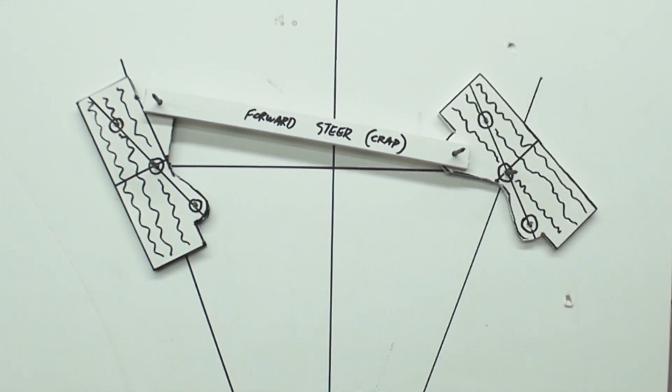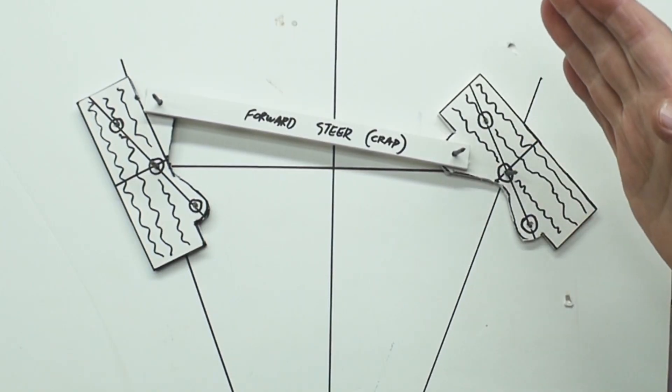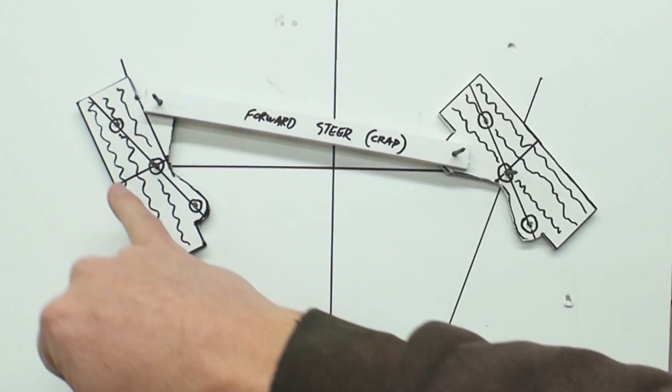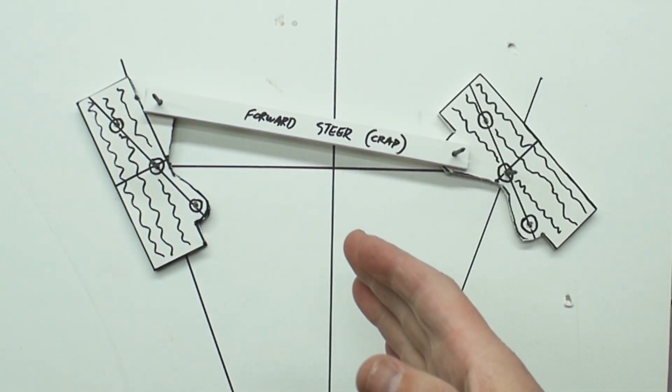So now if you notice, we're getting the complete opposite effect of what we want. I'm turning to the left yet my outboard wheel is making a tighter turn than the inside wheel. Now, you know, this is going to work. It's going to work. It's going to make the turn. However, there's going to be significant scrubbing or sliding, whatever you want to call it.